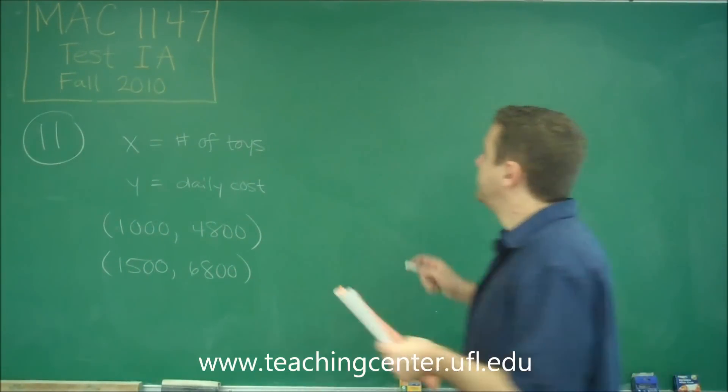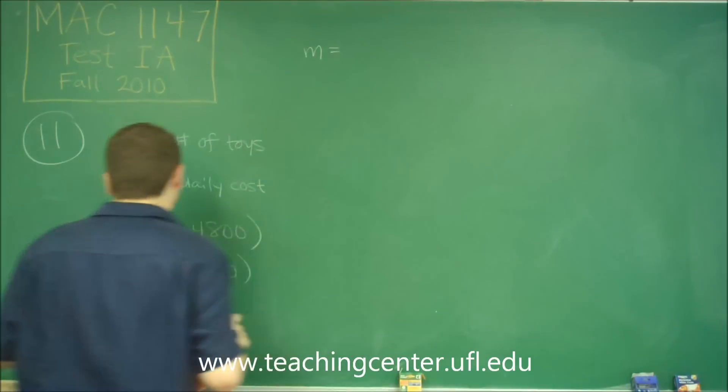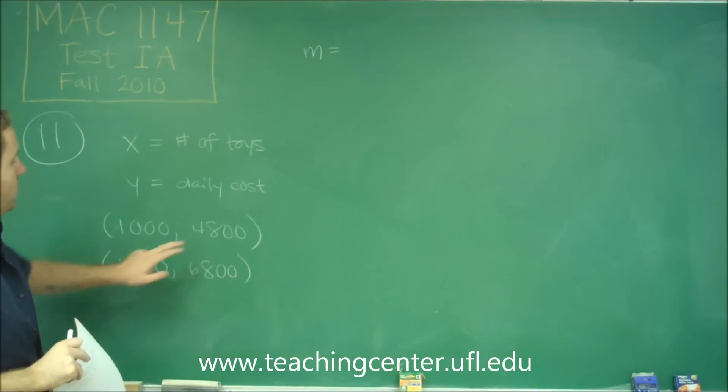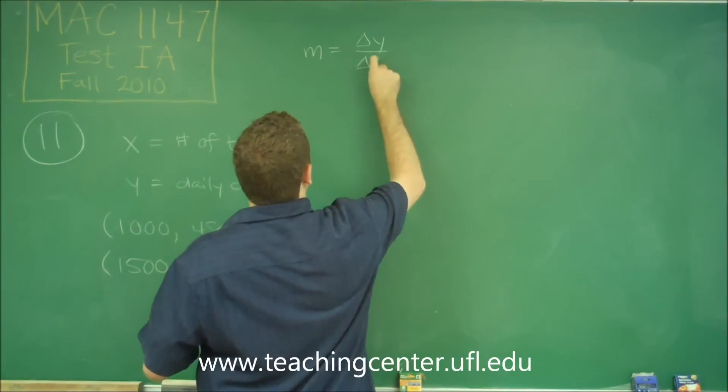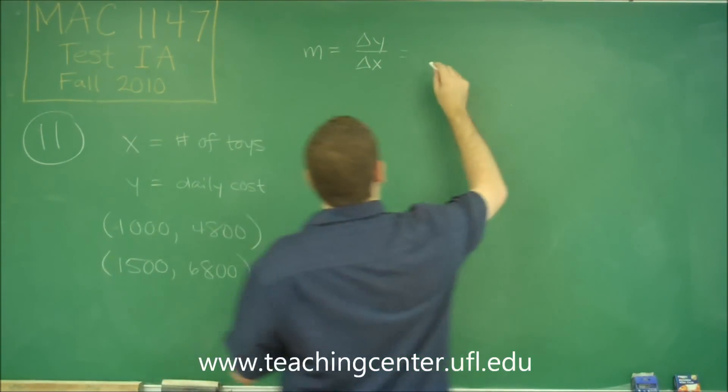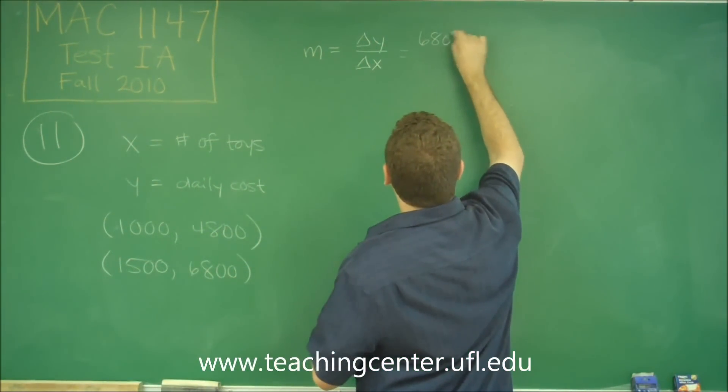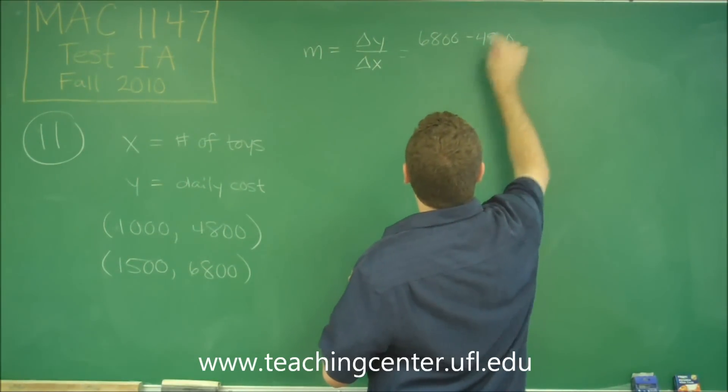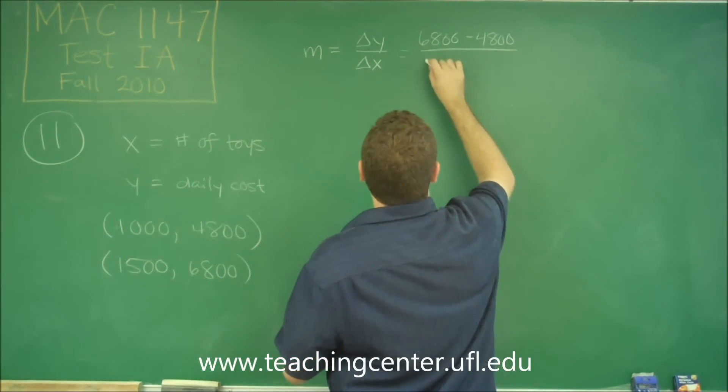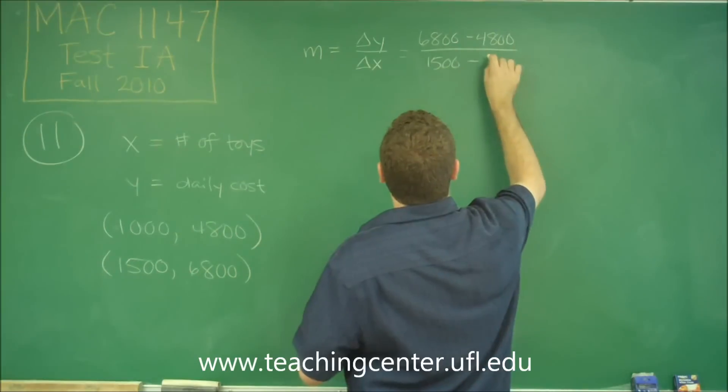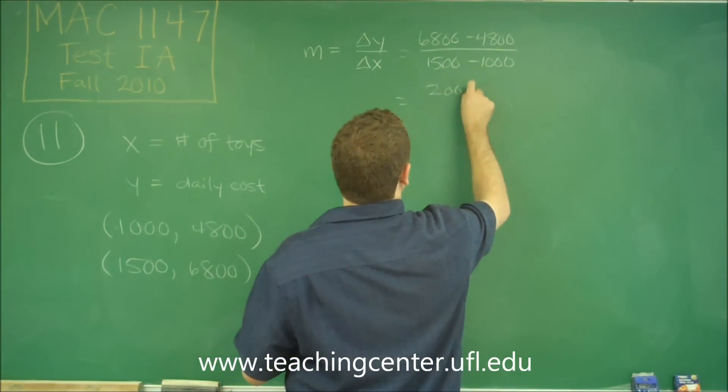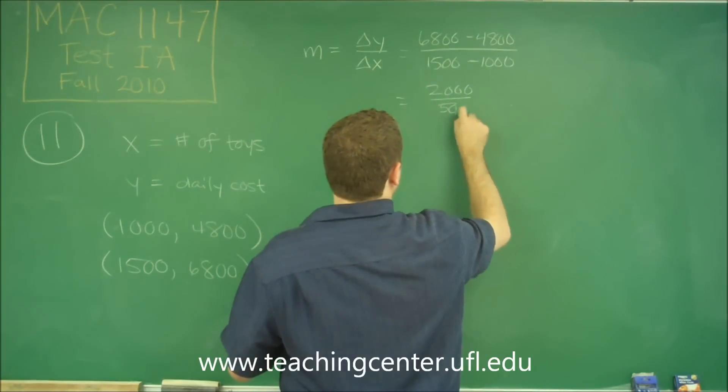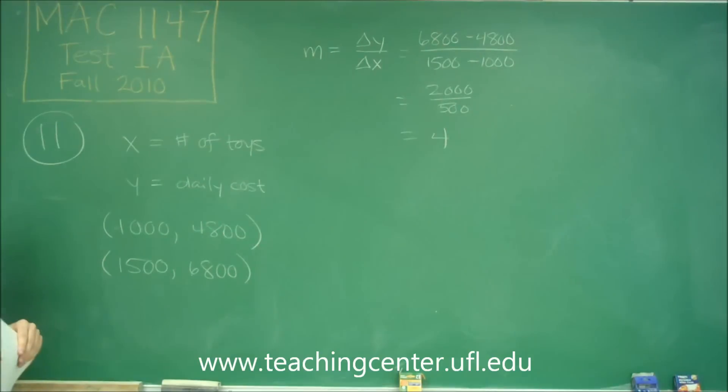So to do that, we need to find the slope, so we can do Y2 minus Y1 over X2 minus X1, remember that the slope is delta Y over delta X. So here we would get 6,800 minus 4,800 all over 1,500 minus 1,000. So that would give us 2,000 over 500, which is 4. So our slope is going to be 4.